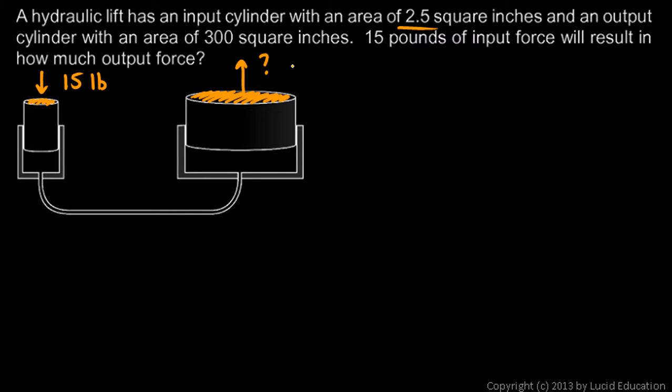So we just need to compare the 300 square inches to the 2.5 square inches. When you do this, the square inches cancel out. The ratio is just a number. 300 divided by 2.5 comes out to 120. That's the mechanical advantage of this hydraulic lift. Hydraulic systems typically give a very large mechanical advantage. They multiply the force by a tremendous amount.